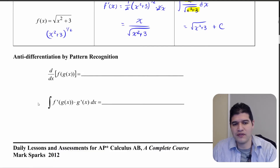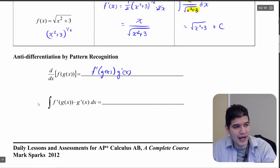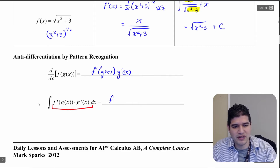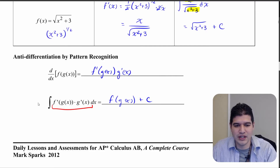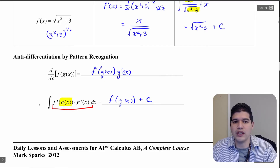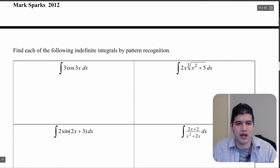We know that the derivative of a composite function is the derivative of the outside with the inside, times the derivative of the inside. So if we're going backwards and we want to take the integral, we know it's just going to be the function with the inside part, plus c. What we're always going to look for is: whatever the inner function is, is that derivative somewhere around? Can I manipulate this equation in some way? Let's see if we can do that now.